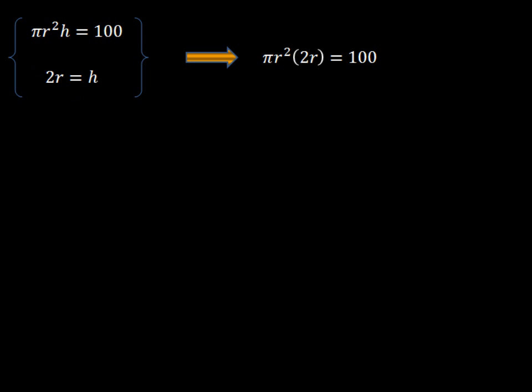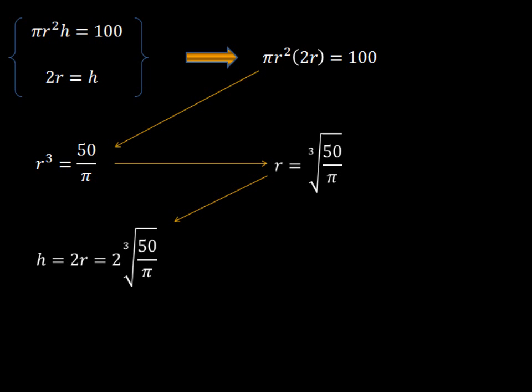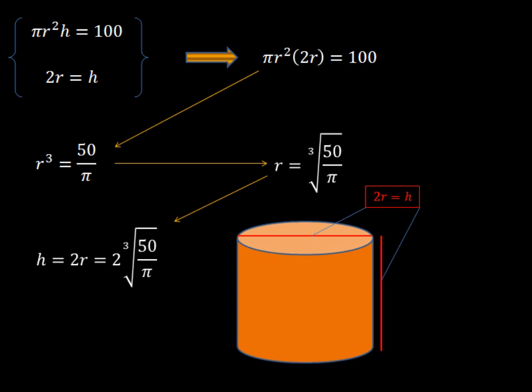And let's go ahead and get our particular can, the one that has the volume 100 milliliters. And we'll use what we know between these two and we'll get the actual number for it. You see, this 2 times the third root of 50 divided by pi will be the actual height and also the diameter. But that's actually less interesting than this.